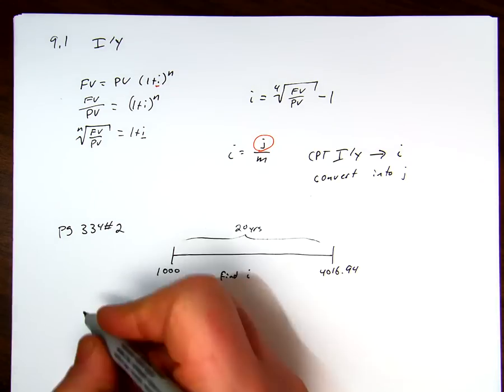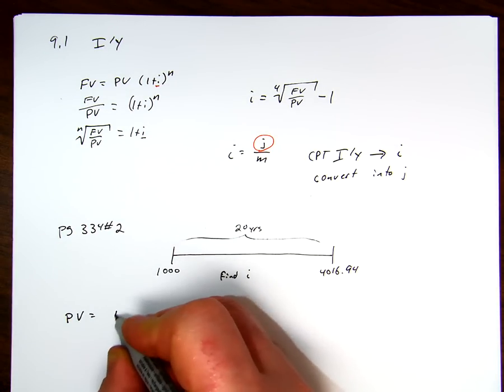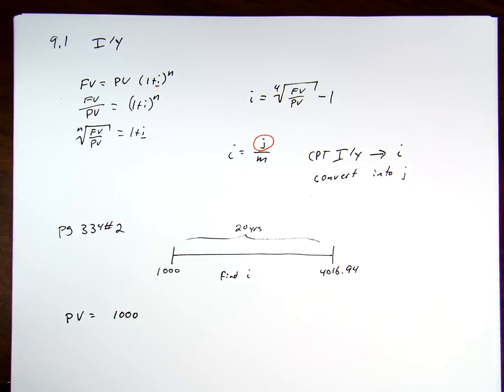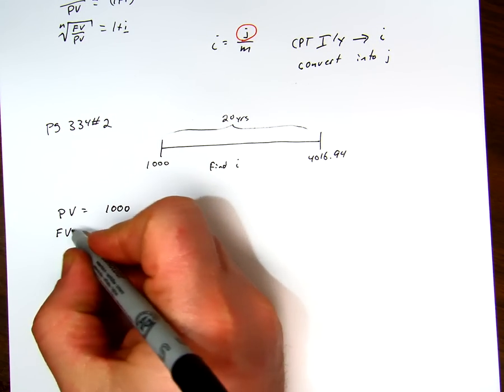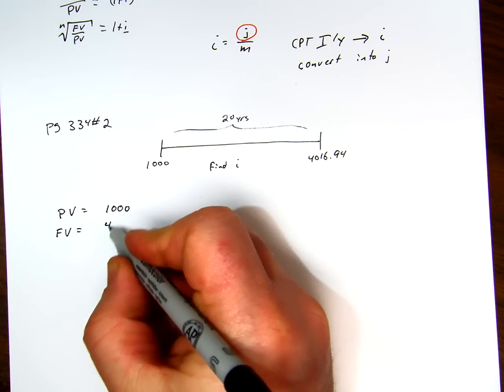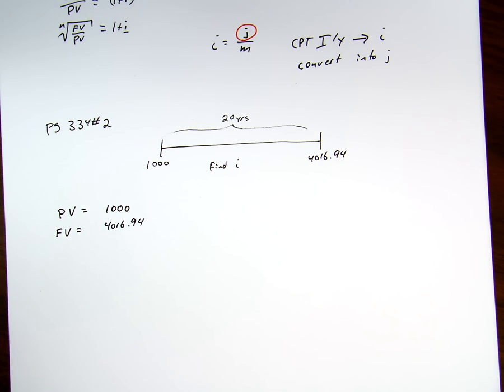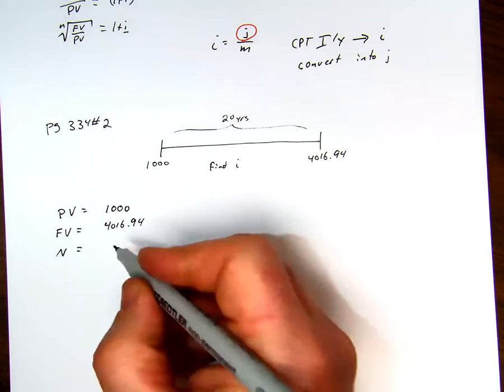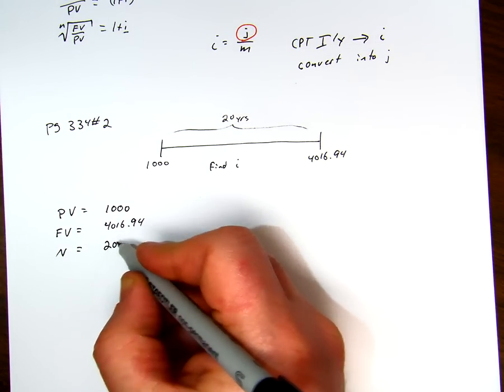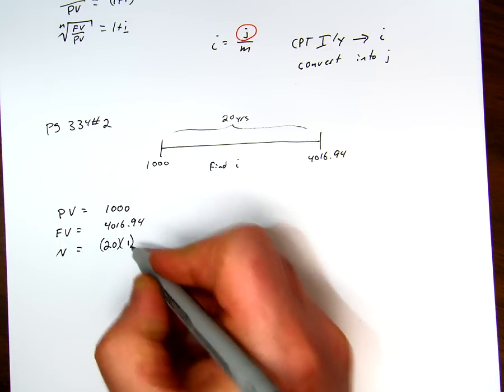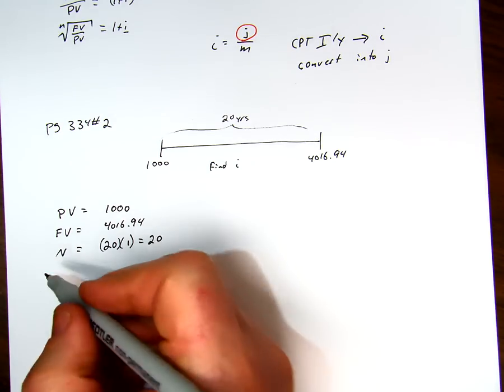So using the values in our calculator, we need to say our present value is $1,000, because that was our starting value. Our future value is the value that we have on the end, which is $4,016.94. N was 20 years, and we're looking at an annual amount, so this is 20 years compounding one time a year, which is 20 years.